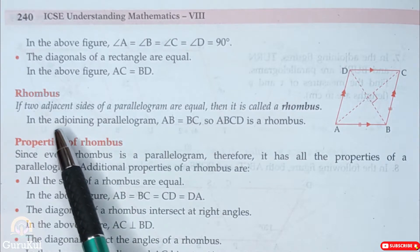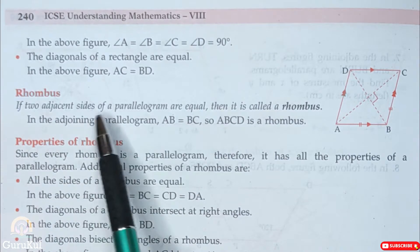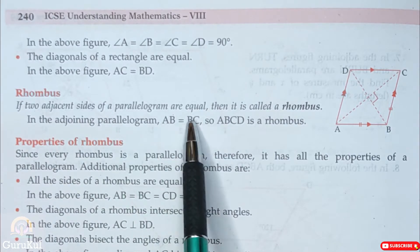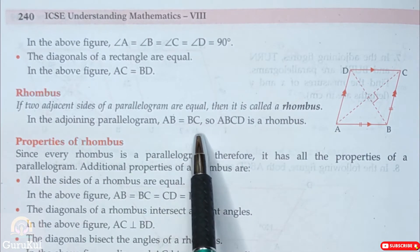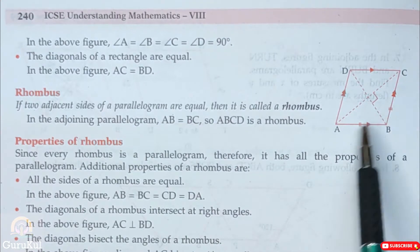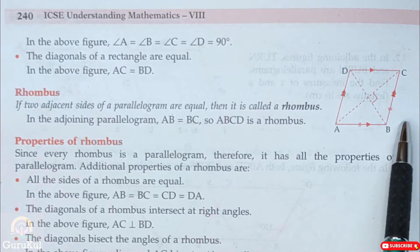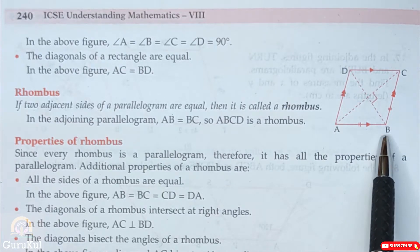Now we are going to move on to the next parallelogram which is rhombus. If two adjacent sides of a parallelogram are equal then it is called a rhombus. See, AB is equal to BC. Two adjacent sides are equal. So ABCD is a rhombus.